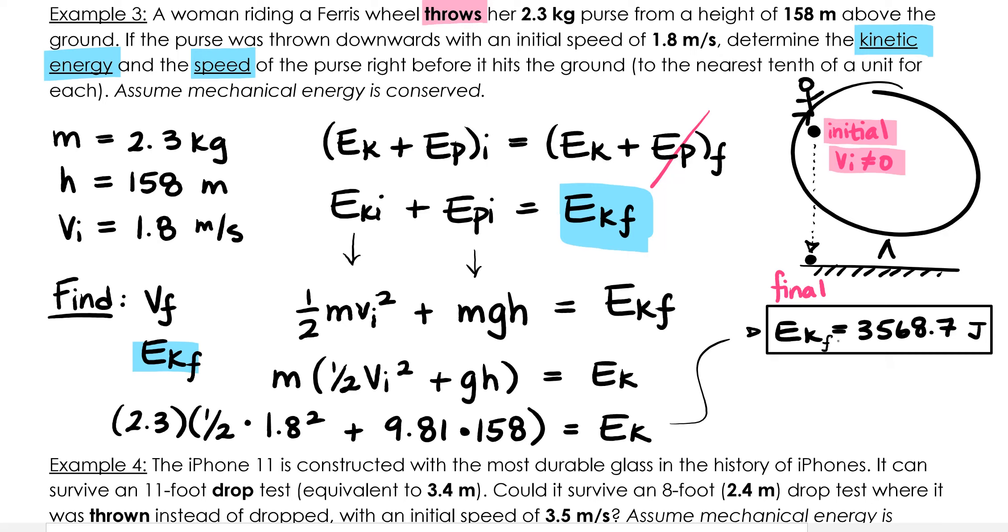The final answer is EK final equals 3568.7 joules. How do you think we could now find the final speed? If you thought of the kinetic energy formula, you're right. EK equals one-half mv squared. All you need to do is rearrange this equation for v and substitute in your values. When you do this, you'll have v equals the square root of 2 times EK all divided by m, which is 55.7 meters per second.